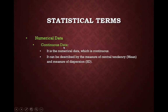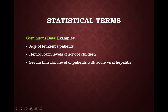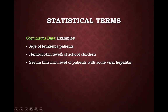The other type of numerical data is continuous data. It can take fractional values and is described in terms of mean and standard deviation, usually if it is normally distributed. An example of continuous data is age of leukemia patients — age can be 1 year, 2 years, 4.5 years, 4.6 years. Similarly, hemoglobin level of school children can be 11, 11.1, 11.2, 11.3. Another example is serum bilirubin level of patients with acute viral hepatitis.